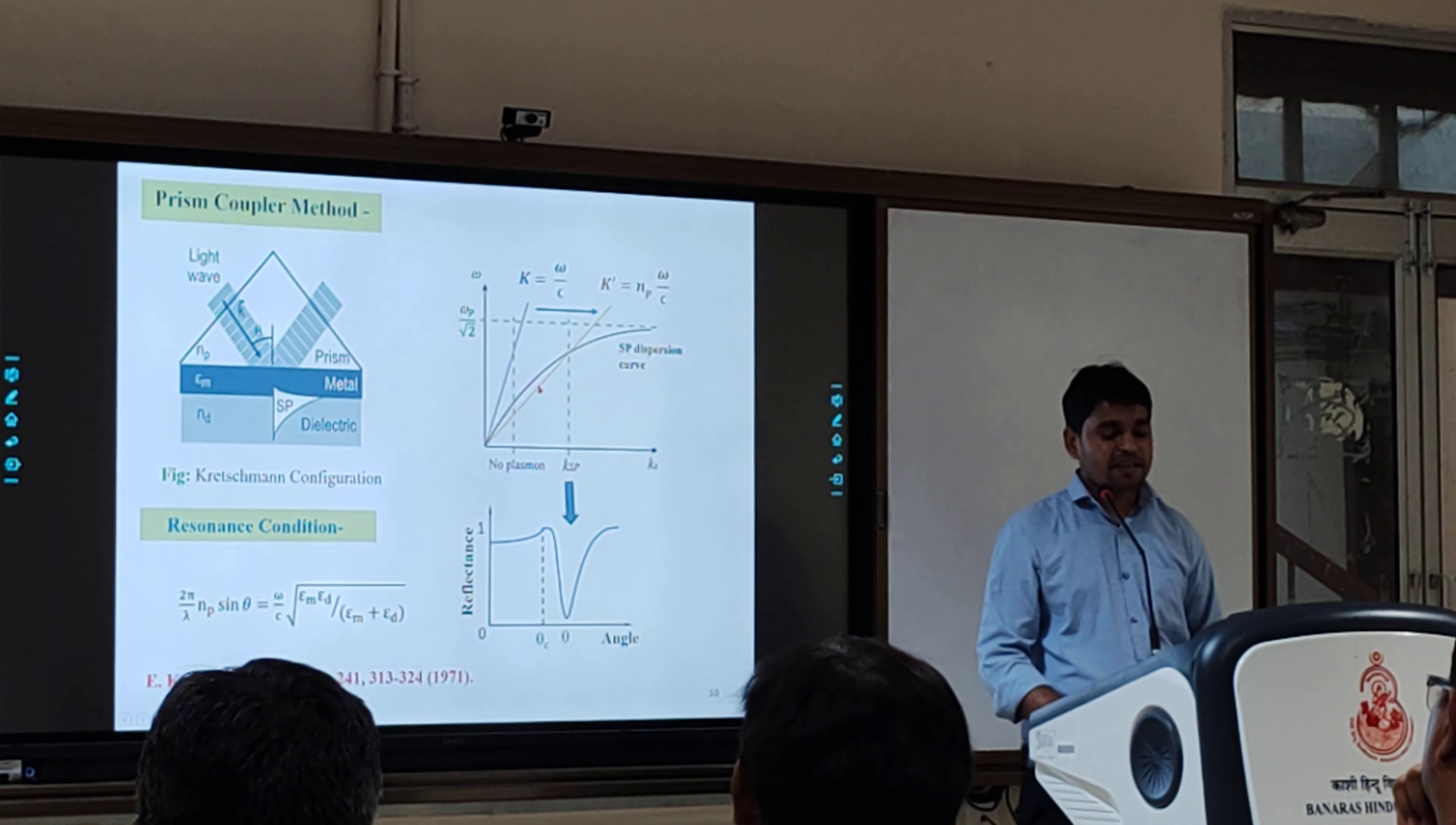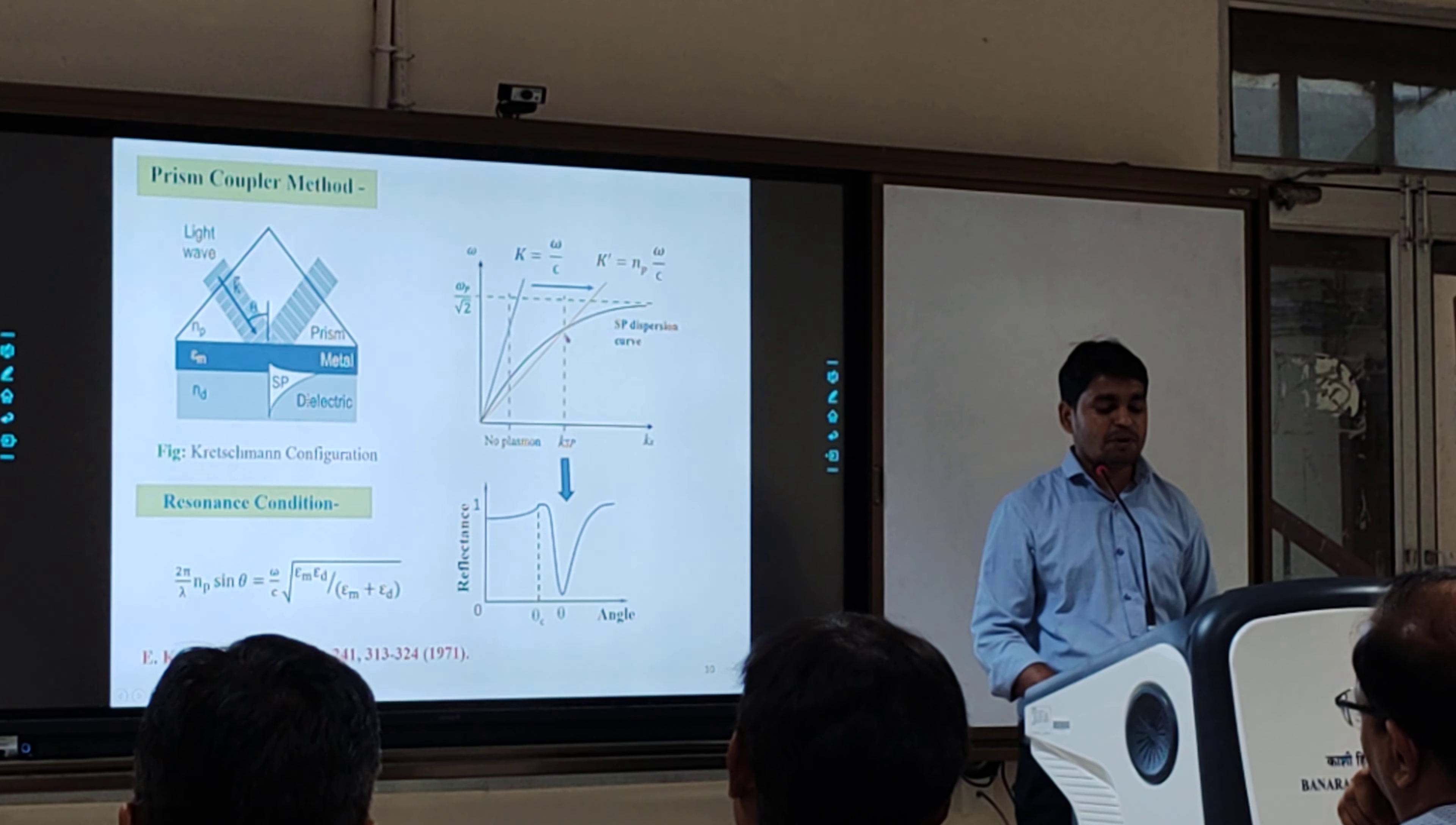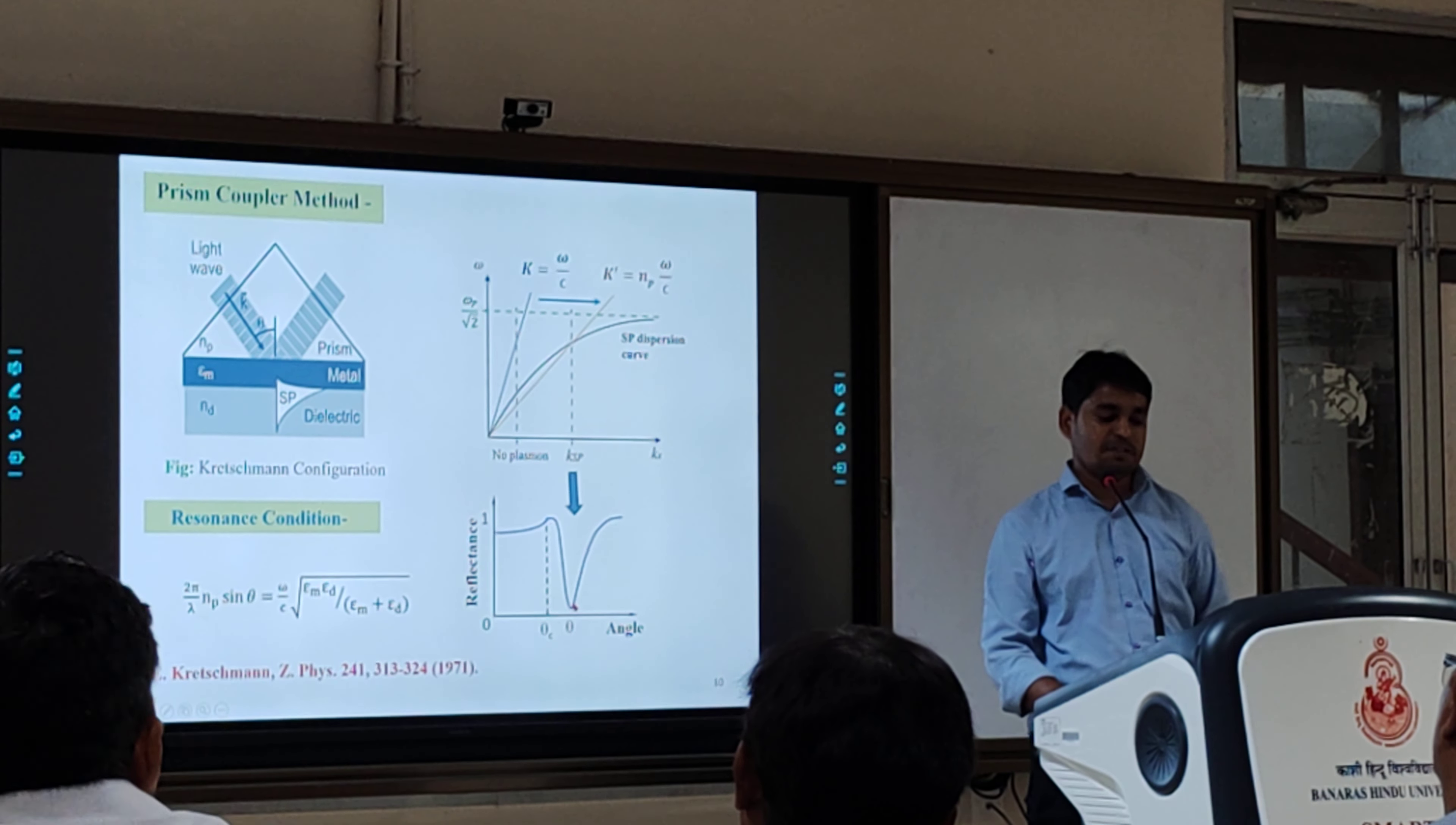Ksp = (ω/c)·np·sinθ, where np is the refractive index of the prism. At a particular angle, the surface plasmon is excited and at this angle light will be absorbed, leading to a minimum dip which shows that maximum light is transferred to the surface plasmons.